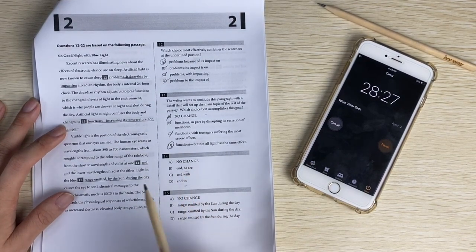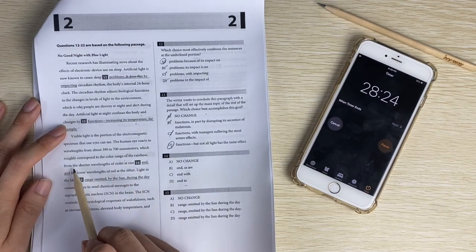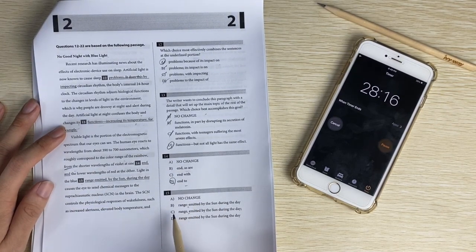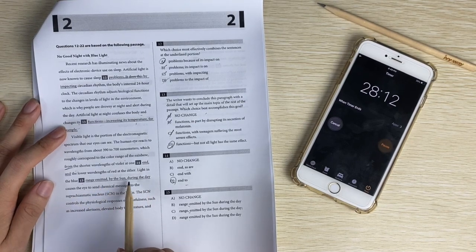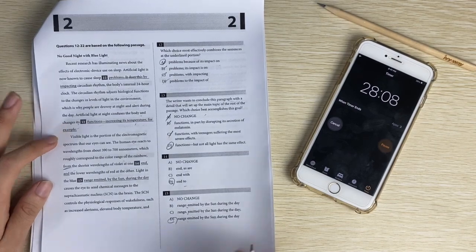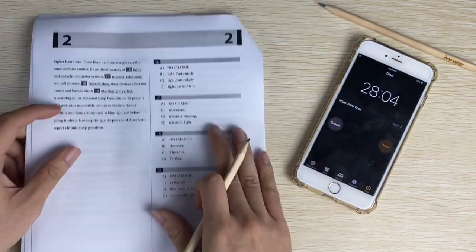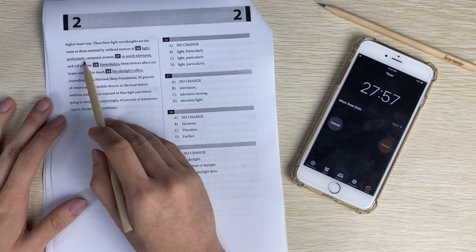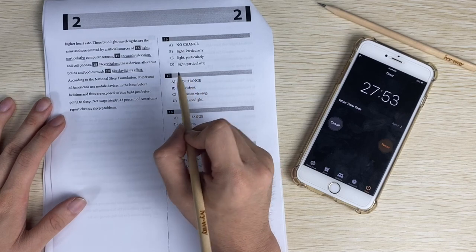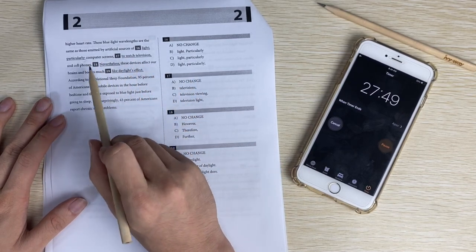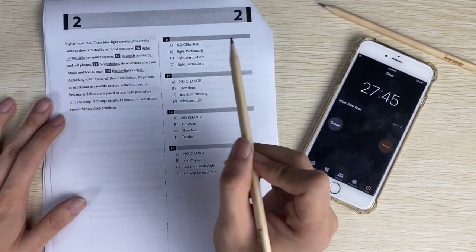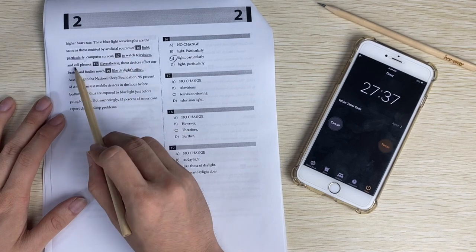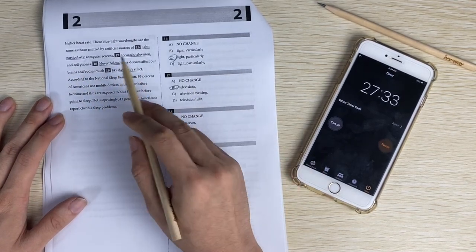Number fourteen, it should be from something to something. So it's D. Punctuation marks, number fifteen. Lights in the blue range emitted by the sun during the day. It should be one thing emitted during the day. D. Number sixteen, blue light wavelengths are the same source of light. Particularly should be two sentences. Should be one sentence because the second part is a fragment. So light, particularly those things. Number seventeen, computer screens to watch television. So these are parallel. These should be parallel. So televisions is like computer screens.